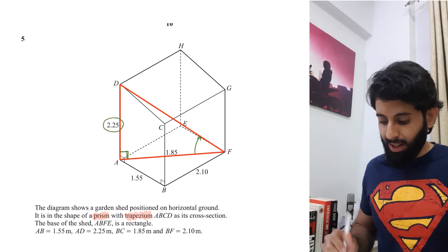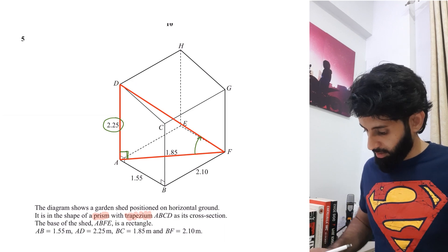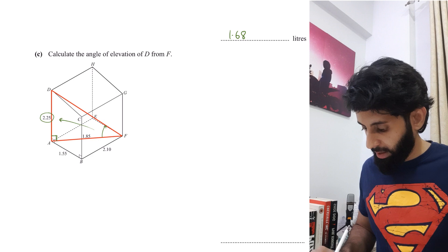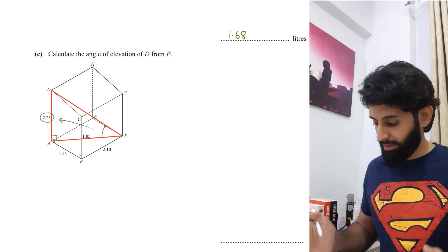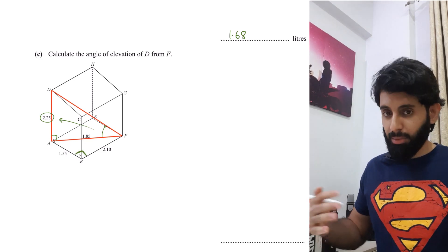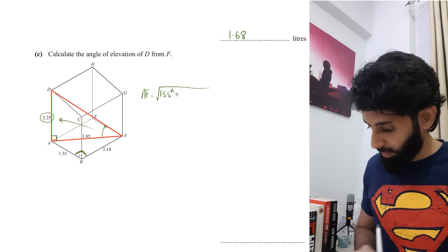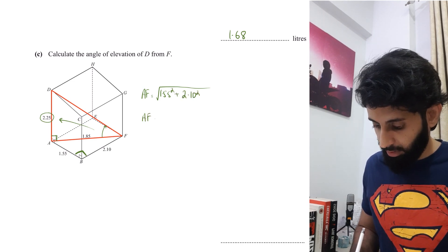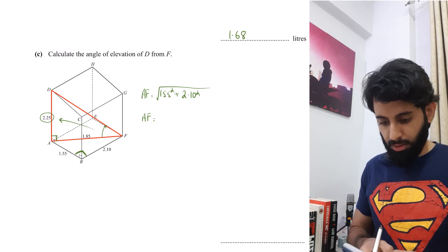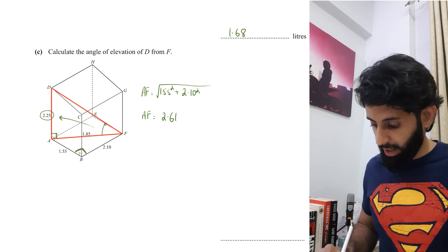I have the opposite side = 2.25. I need the adjacent side AF. Do not assume AF = 1.85 — that would be wrong. Since the base ABFE is a rectangle, I use Pythagoras: AF = √(1.55² + 2.10²) = √(2.4025 + 4.41) = √6.8125 = 2.6100, so AF ≈ 2.61.